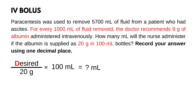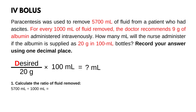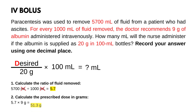You notice that we need to do some calculations first to get the doctor's order. We know that 5,700 mL of fluid was removed, and for every 1,000 mL removed, the doctor recommends 9 g of albumin. First, calculate the ratio of fluid removed: 5,700 mL divided by 1,000 mL equals 5.7. Now calculate the prescribed dose in grams: 5.7 times 9 g equals 51.3 g. So 51.3 g is the doctor's order. Now we can calculate: 51.3 g divided by 20 g times 100 mL. Grams cancel out and the answer is 256.5 mL.